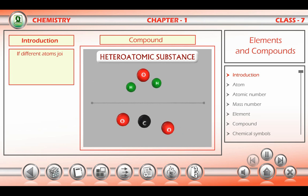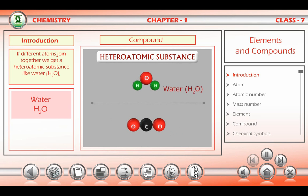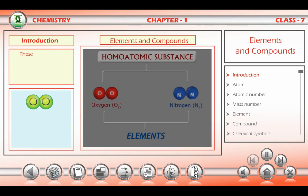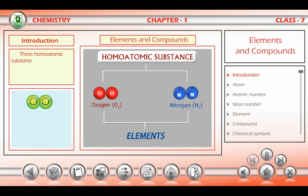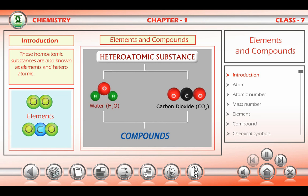If different atoms join together, we get a heteroatomic substance like water, carbon dioxide, etc. These homoatomic substances are known as elements and heteroatomic substances as compounds.